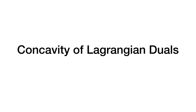I wanted to make a video about something I discovered last spring when I was teaching a class on optimization for machine learning. We were reading about Lagrangian duality, which is a well-studied idea that's kind of core in machine learning. And I discovered something I really didn't know before: Lagrangian duals are always concave — well, for any minimization problem, they are concave.